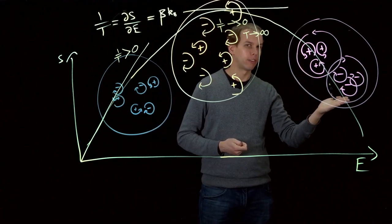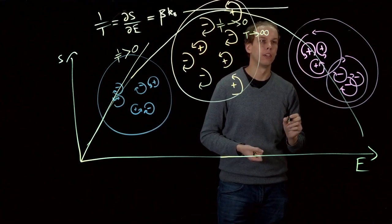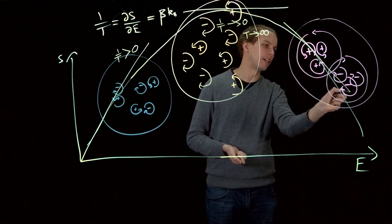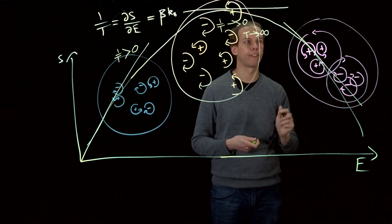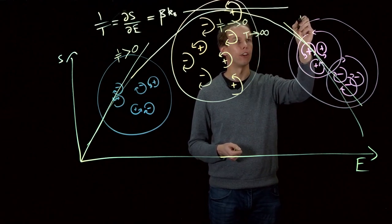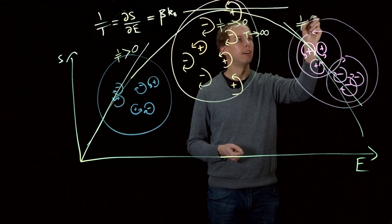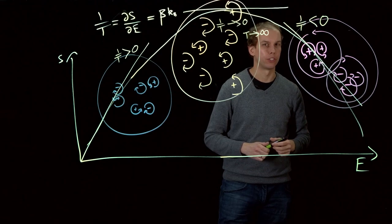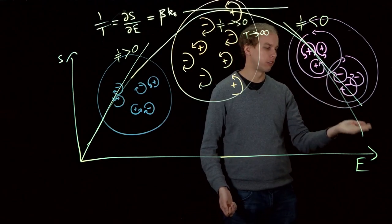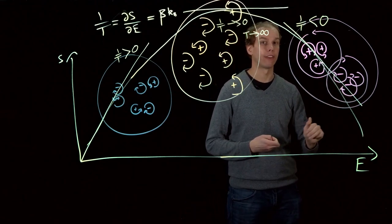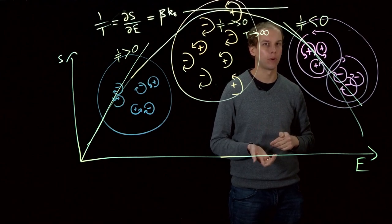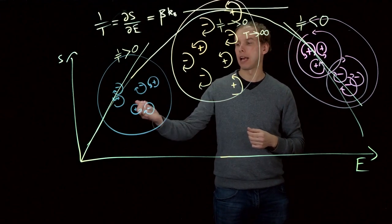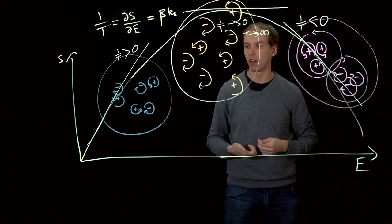As we continue increasing the energy of the system, we come into this region of the phase space, where the tangent line on this graph is actually negative. And so 1/T is less than zero. In this region of space, we have a negative absolute temperature. At the extreme energy, we have negative absolute zero, which is going to be the highest possible temperature available in this system, as opposed to absolute zero, which is the lowest possible temperature.